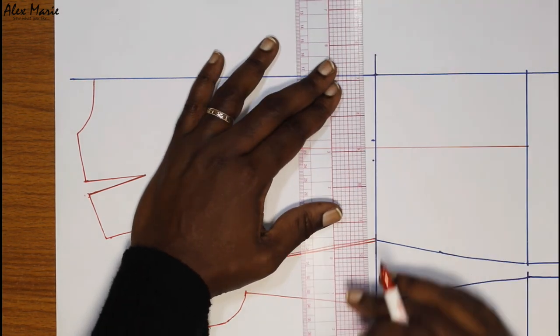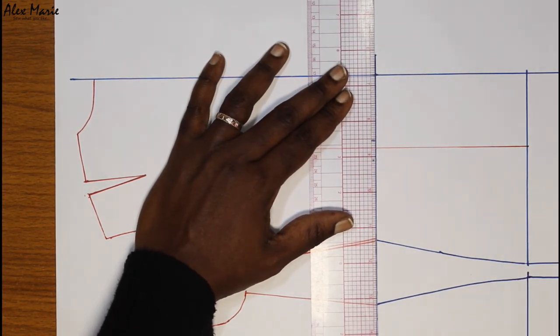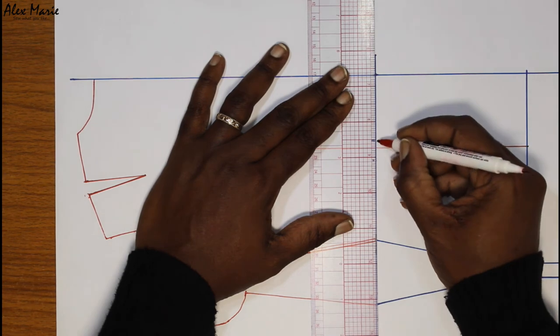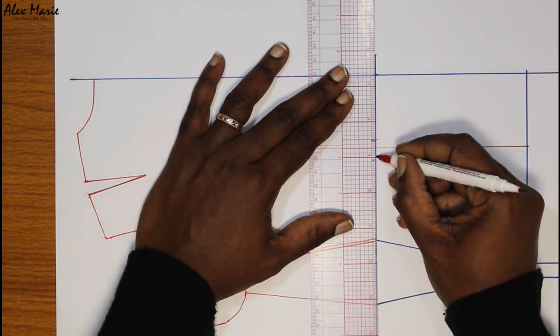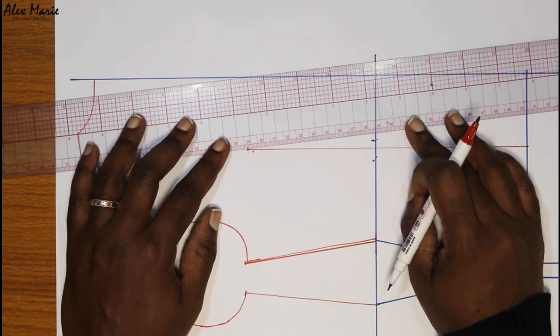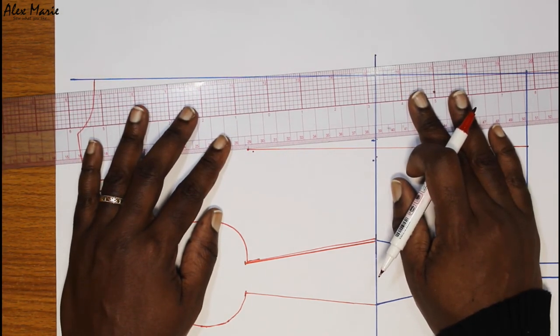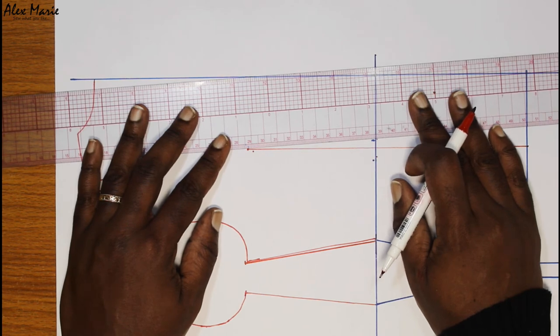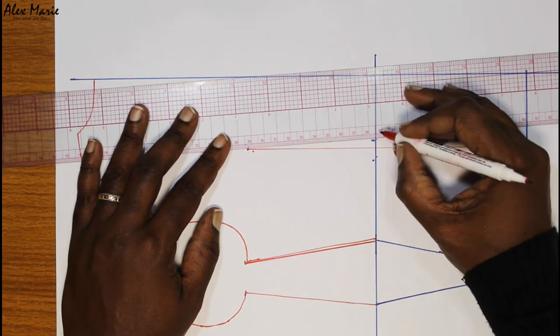And then, it's half an inch. I'm going to put that on this. So, we're ignoring those blue ones now. We're going to put the new dart measurements. Half an inch on this side. Half an inch on this side. And then, connect.